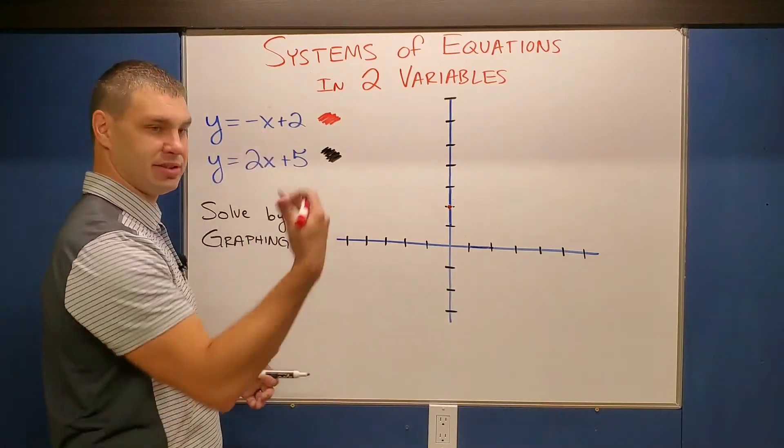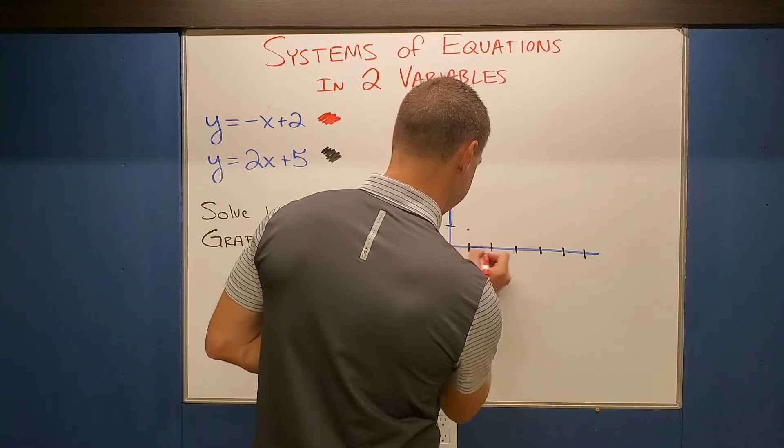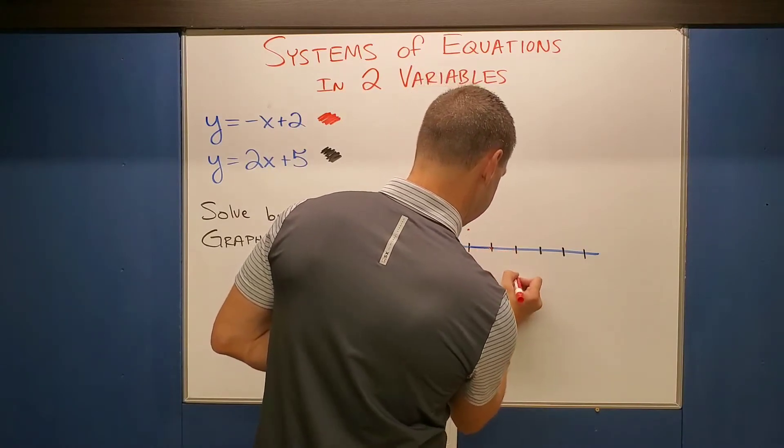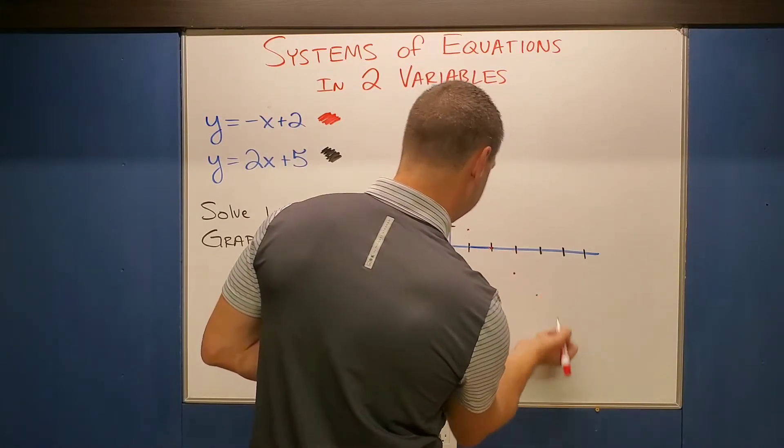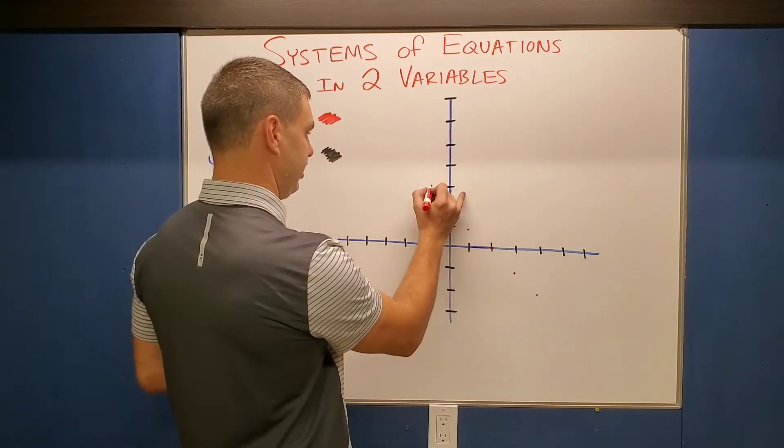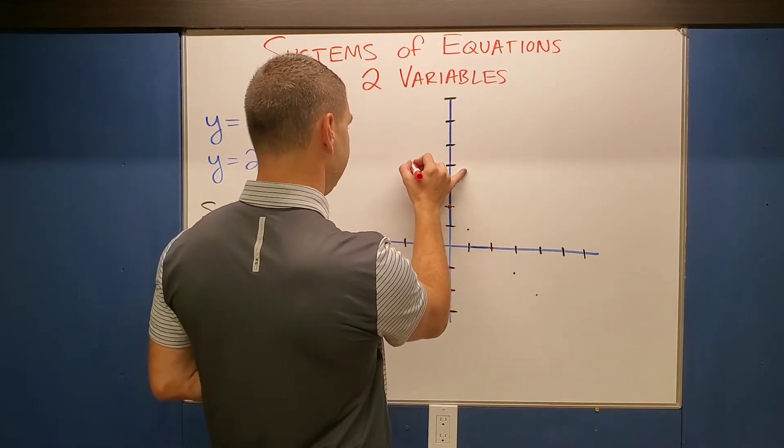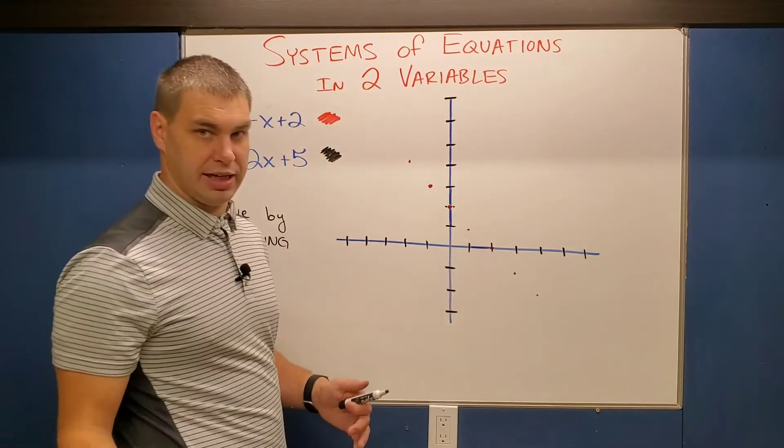And then it's a negative x. This is negative one over one, which means I can go down one to the right one. I can do that several times. Down one to the right one. Or I could also go up into the left, right? Up one and left one. You can see that is in the same line like that. I could do that again, up one, left one. And that should be enough to get a pretty straight line.